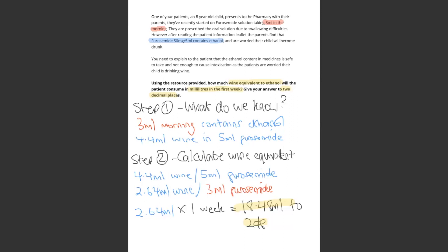We know that 5 ml contains 4.4 ml of wine, but we have a dose of 3 ml in the morning, highlighted in red. This is equivalent to 2.64 ml of wine. The question asks for the first week, so 2.64 ml times 1 week is 18.48 ml to 2 decimal places. The answer is correct — it's in milliliters and to 2 decimal places.